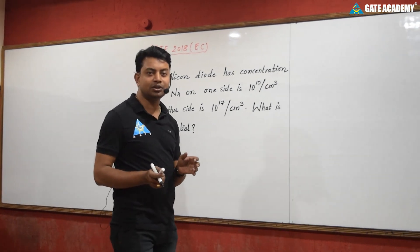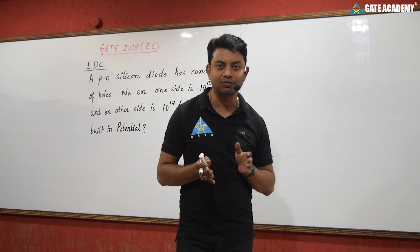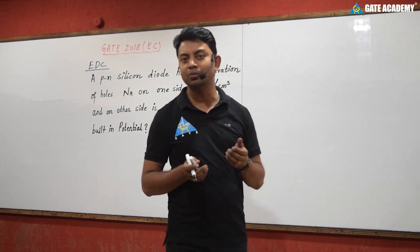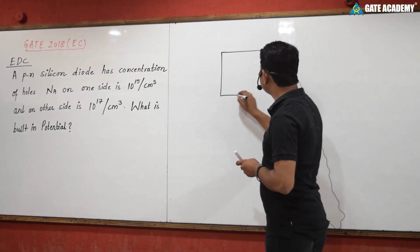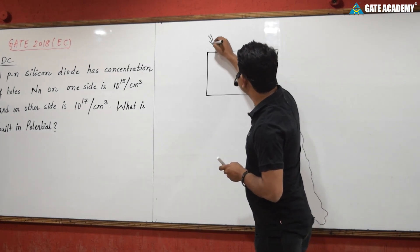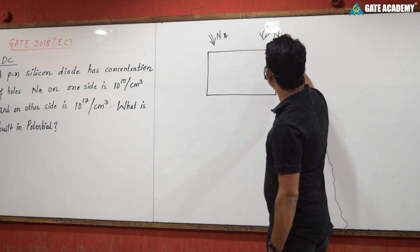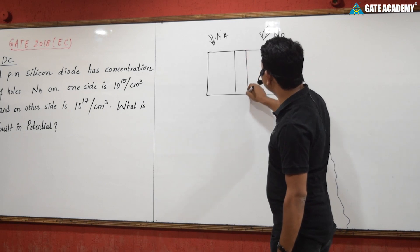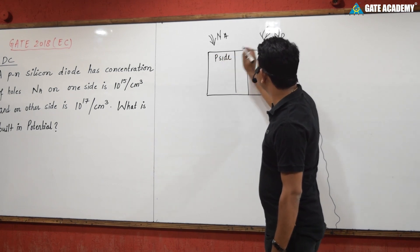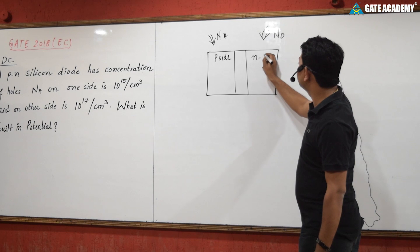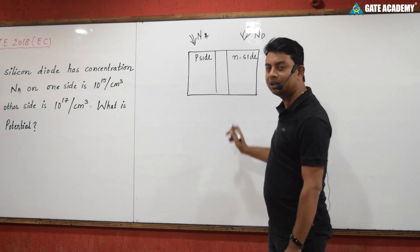If you are talking about a PN junction, the built-in potential is the voltage across the depletion region of an open-circuited diode. Suppose we have a diode with some doping — one side has acceptor atoms (P-side) and the other side has donor atoms (N-side). This diode is ready to form a depletion region at its center.